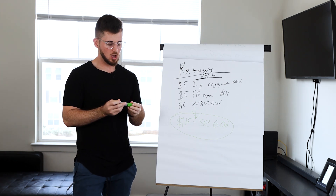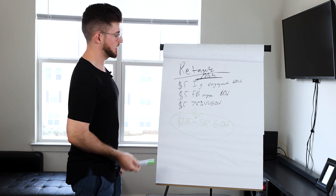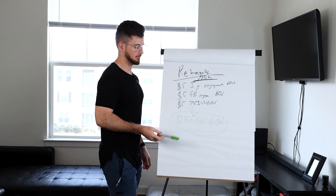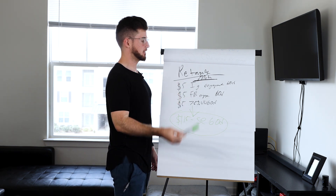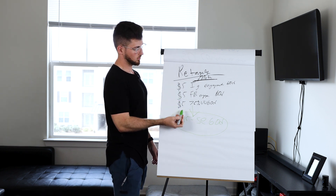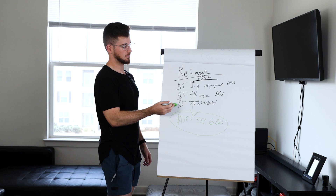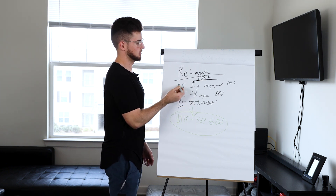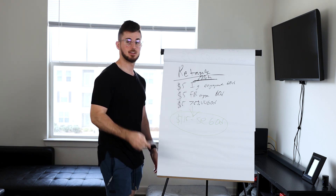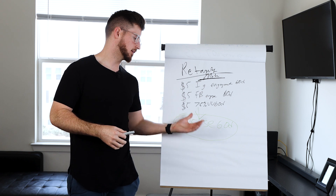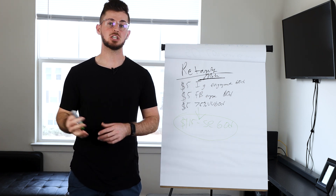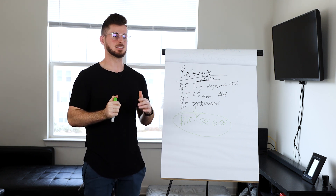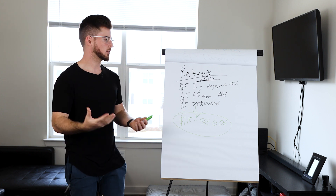This is how you maximize budget — one ad set at 15 dollars a day versus three ad sets at five dollars each. Remember, it's not the whole campaign that gets out of learning limited; it's each individual ad set that has to get 50 conversion events to reach active status. For retargeting, you're not reaching new people — you're targeting people already in the funnel — but we've still seen improvements from consolidation.